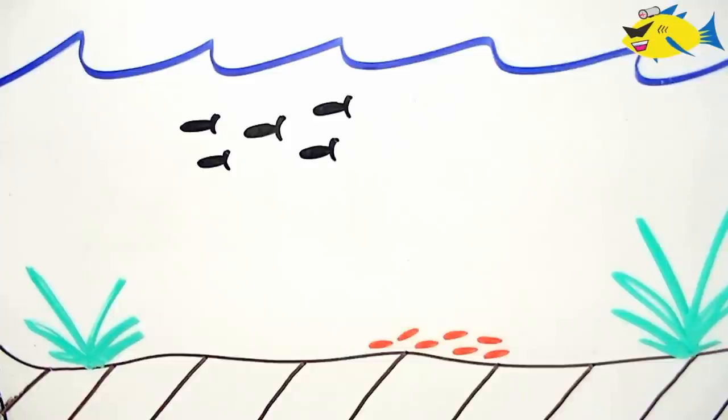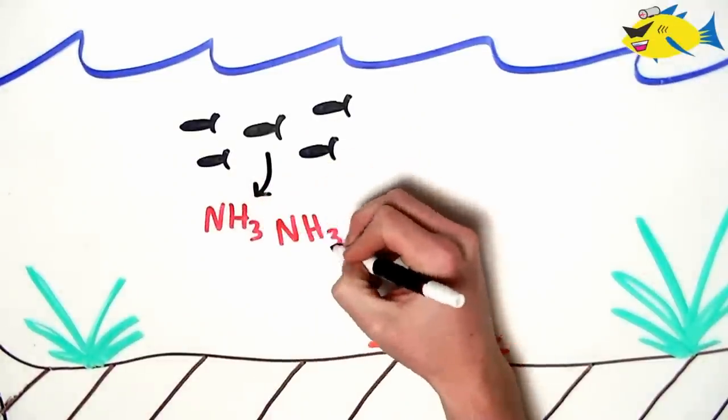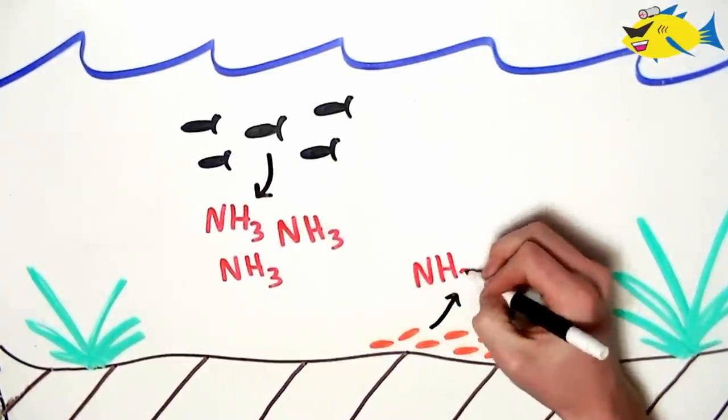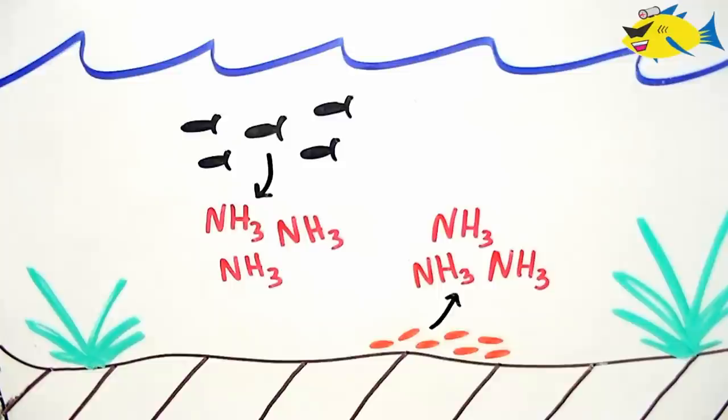In our aquarium, ammonia is generated primarily by fish waste and the decomposition of organic matter by heterotrophic bacteria. We want to limit the amount of this compound because it's extremely toxic to fish and most other organisms in our tank.